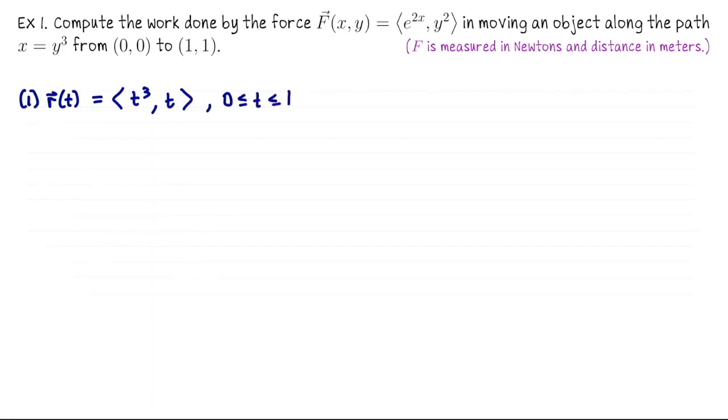Next we need to evaluate our vector field along this path. So we do F(r(t)), which will be F(t³, t), which will return us back (e^(2t³), t²).